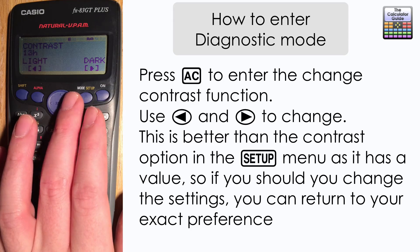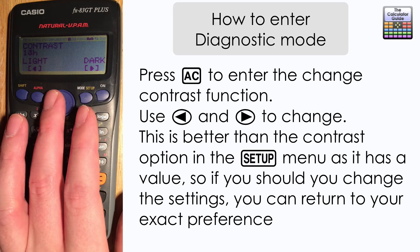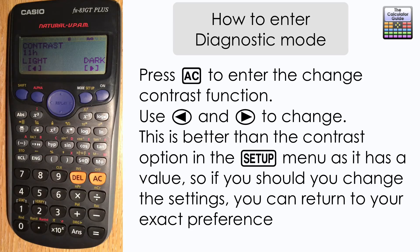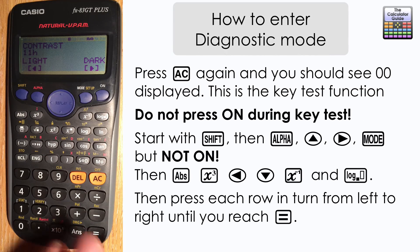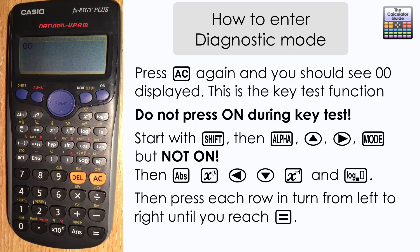This is quite useful if you reset your calculator or change it in some way and you want to return to the exact value that was your preference from before. So once you're happy with your contrast, you can then press AC.